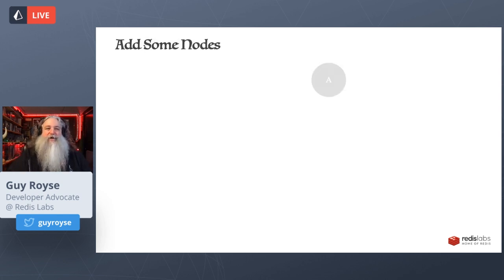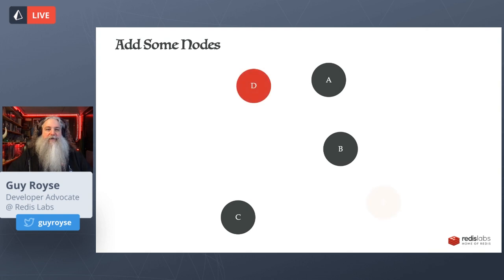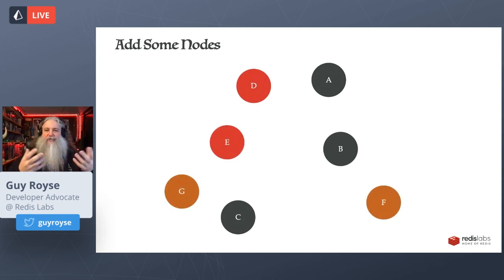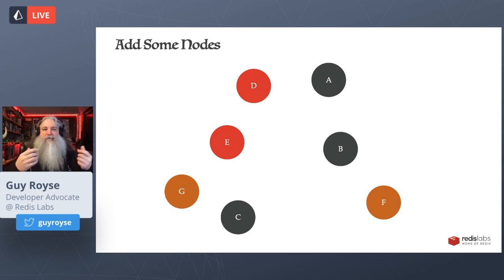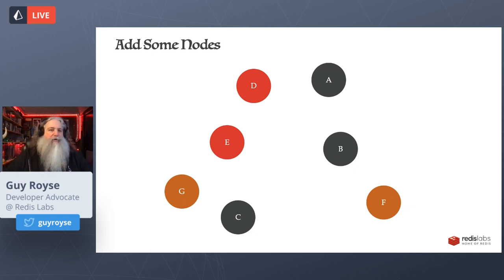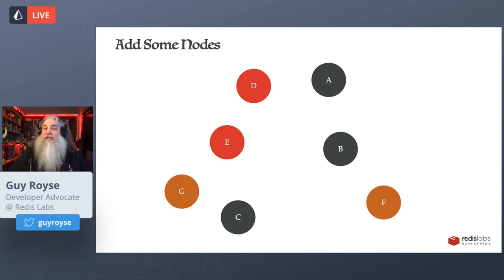Let's add some nodes to our null graph to make it a little more interesting. Now we've got nodes A through G — they don't have to have relationships to each other; they can just be points floating in space. This is still a perfectly valid graph, just not a super interesting one.